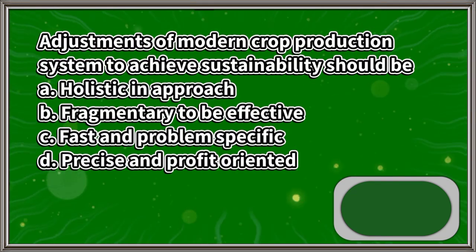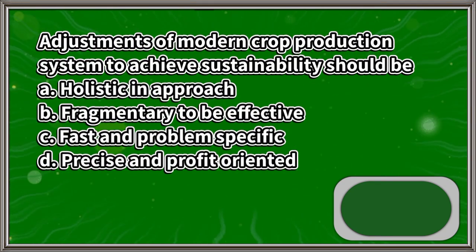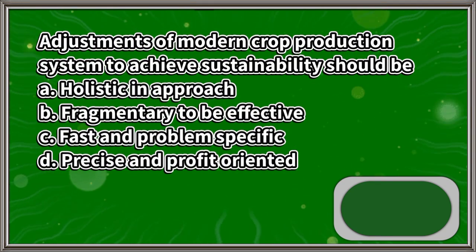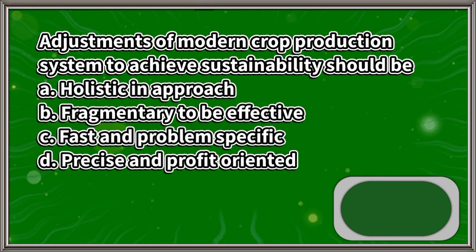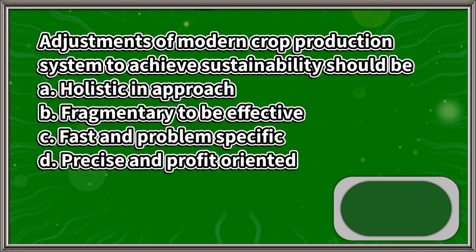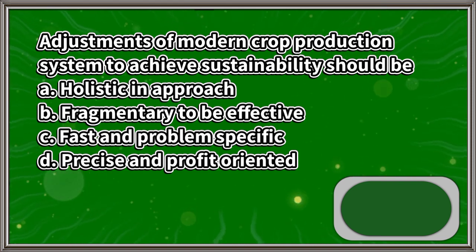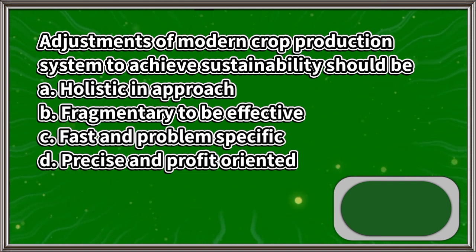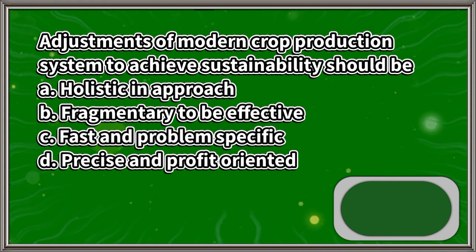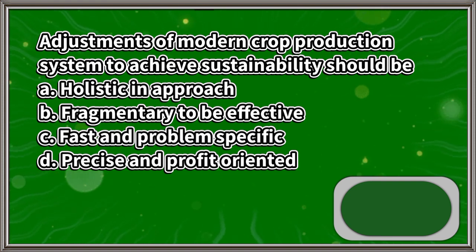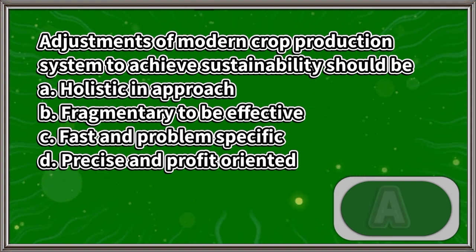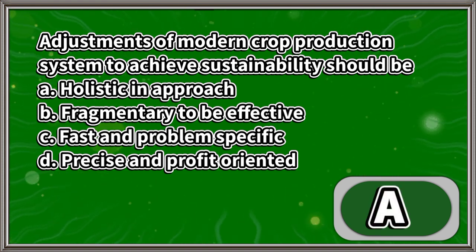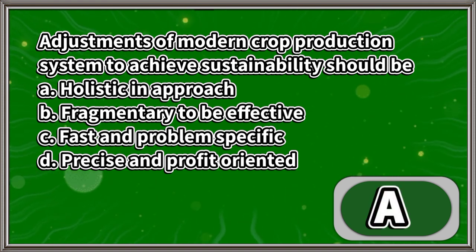Adjustments of modern crop production systems to achieve sustainability should be: A. Holistic in approach, B. Fragmentary to be effective, C. Fast and problem-specific, D. Precise and profit-oriented. The answer is letter A.